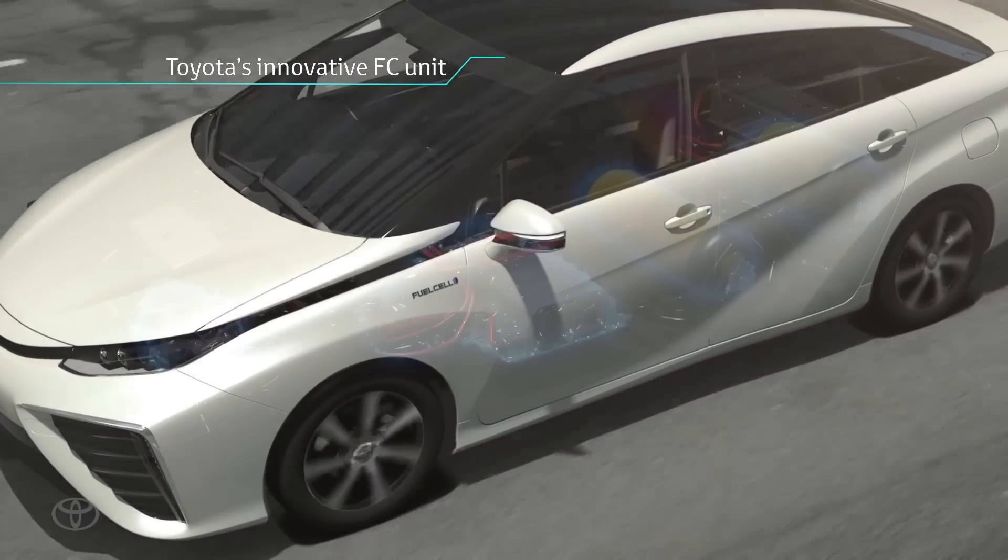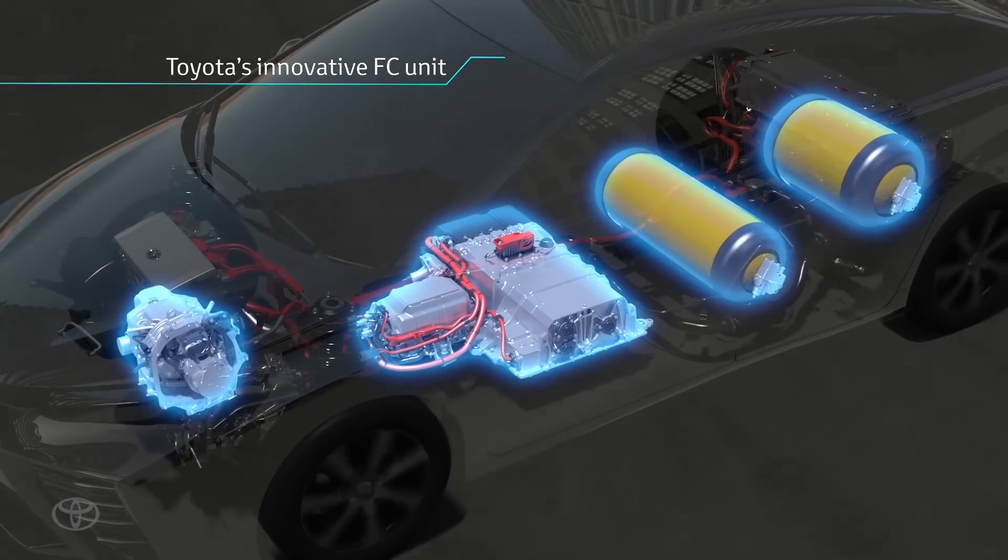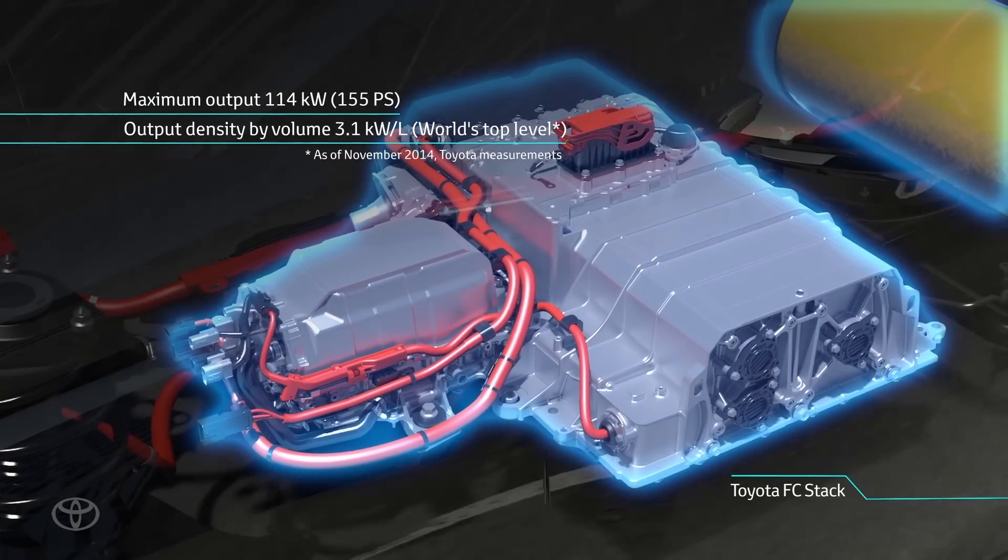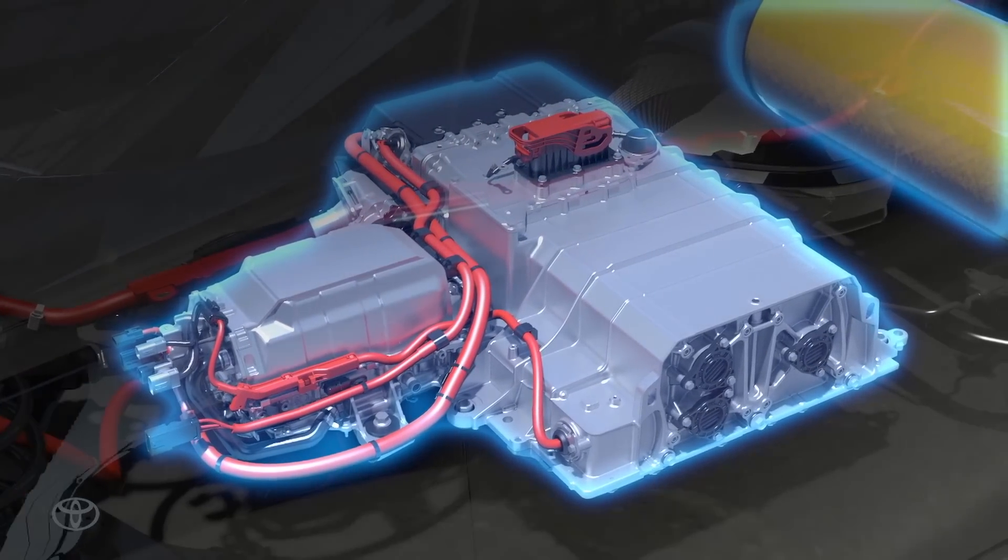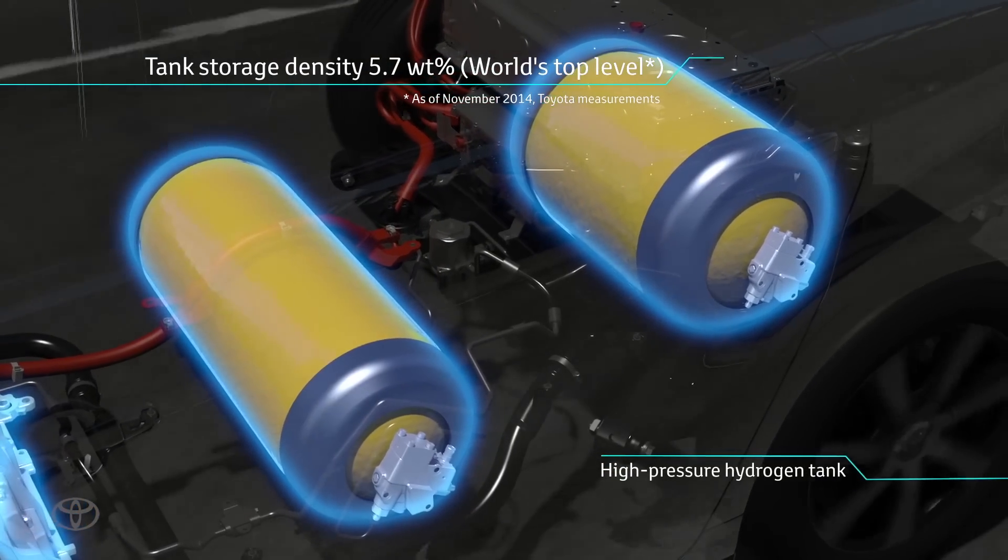The fuel cell unit in the FCV generates over 100 kilowatts of its own electricity, operating at 3.1 kilowatts per liter of output power density. The high pressure hydrogen tank contains 5.7 watts percent, which is a world class feature.